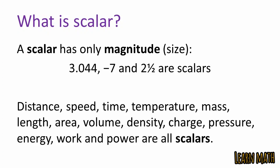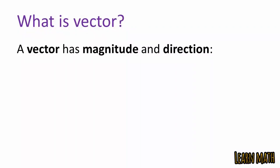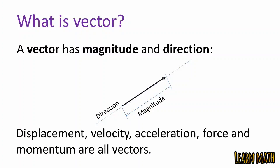A vector has both magnitude and direction. For example, this is vector A — the blue line represents the direction of the given vector and the bold line represents the magnitude. Those quantities which have both magnitude and direction are called vector quantities. Displacement, velocity, acceleration, force, and momentum are all vector quantities.